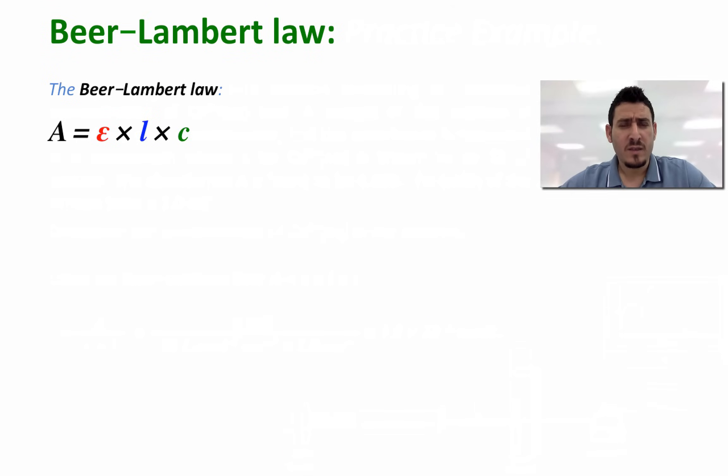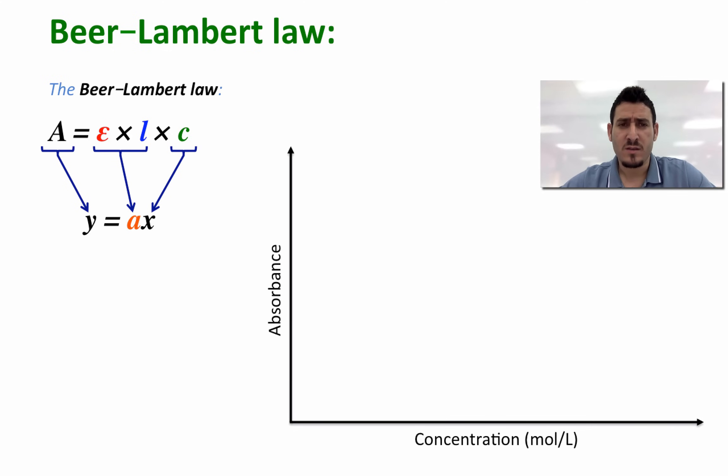Another practical aspect of the Beer-Lambert law is that the expression is similar to the mathematical expression y equals ax, where A corresponds to y, epsilon l corresponds to a, and c corresponds to x. This way we can plot the absorbance versus the concentration, which is going to be a straight line that passes through zero. If we find the slope of this plot using delta A divided by delta c, we get epsilon times l. So how can we benefit from this experimentally?